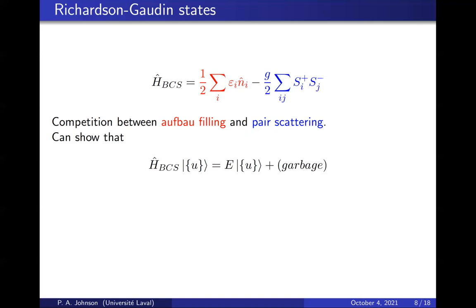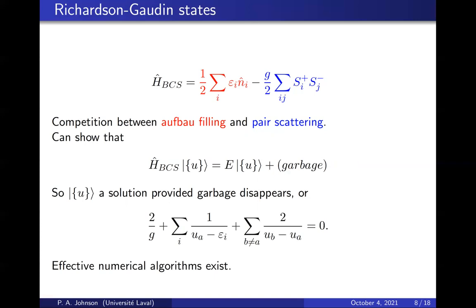As long as the garbage disappears numerically, you have an eigenvector of this Hamiltonian. That is exactly the structure of what is called the Bethe ansatz wave function. Provided the linearly independent garbage disappears, you have an eigenvector, which happens if these nonlinear equations are satisfied.